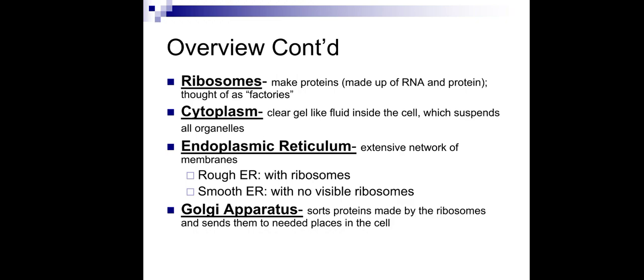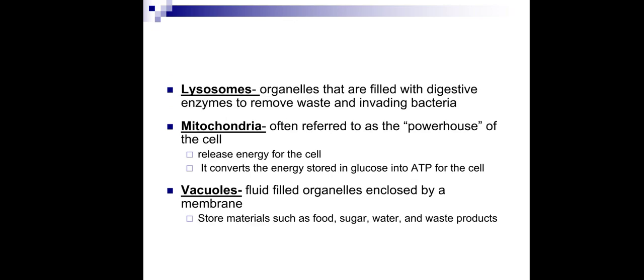The Golgi apparatus is another kind of organelle inside eukaryotic cells. It refines the protein made by the ribosome and sends them to the needed places of the cell. The lysosome is another organelle — it is filled with digestive enzymes and is used to remove waste products and invading bacteria, so it is the defense mechanism of a cell.